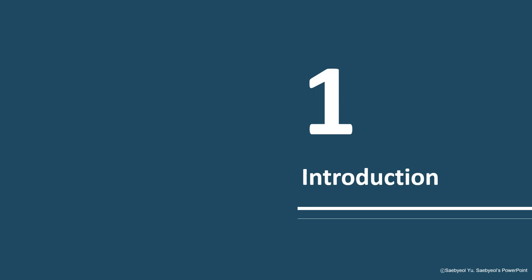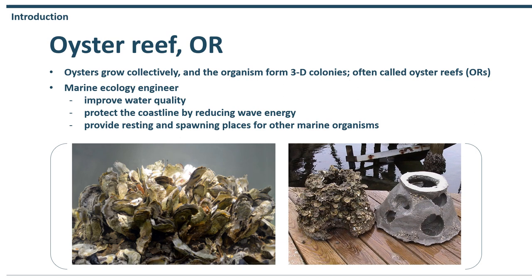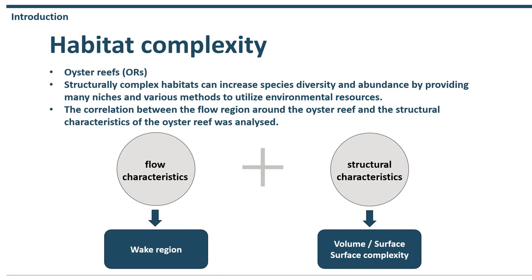First, introduction. The key point of this study is oyster reef. Oysters grow collectively and they form three-dimensional colonies, often called oyster reef. They are regarded as important marine ecology engineers because they can improve water quality, protect coastal life by reducing wave energy, and provide a resting and spawning place for other marine organisms. Oyster reefs are representative aquatic ecosystems with habitat complexity, meaning that structurally complex habitats can increase species diversity and abundance by providing many niches and various methods to utilize environmental resources.